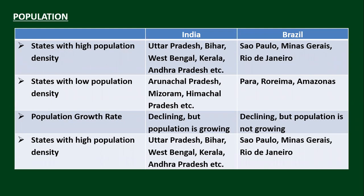States in India with high population density include UP, Bihar, West Bengal, Kerala, and Andhra Pradesh. In Brazil, the states of São Paulo, Minas Gerais, and Rio de Janeiro have high population density. States in India with low population density include Arunachal Pradesh, Mizoram, and Himachal Pradesh. In Brazil, Para, Roraima, and Amazonas have low population density.